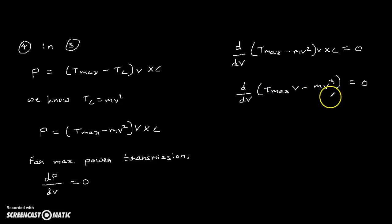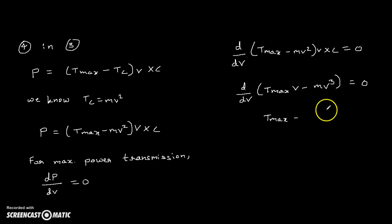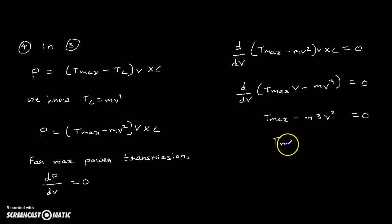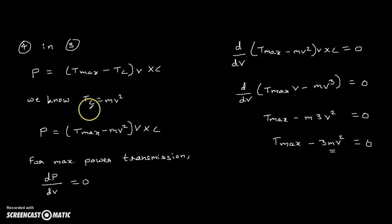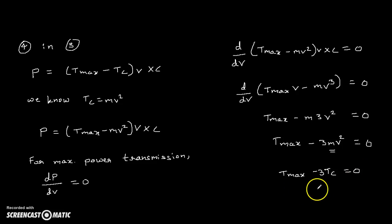Applying differentiation to each term: T_max is constant so d(v)/dv = 1, giving T_max. For mv³, differentiating gives 3mv². So we get: T_max minus 3mv² = 0. Observing that 3mv² equals 3Tc, we can write T_max minus 3Tc = 0, which gives T_max = 3Tc.